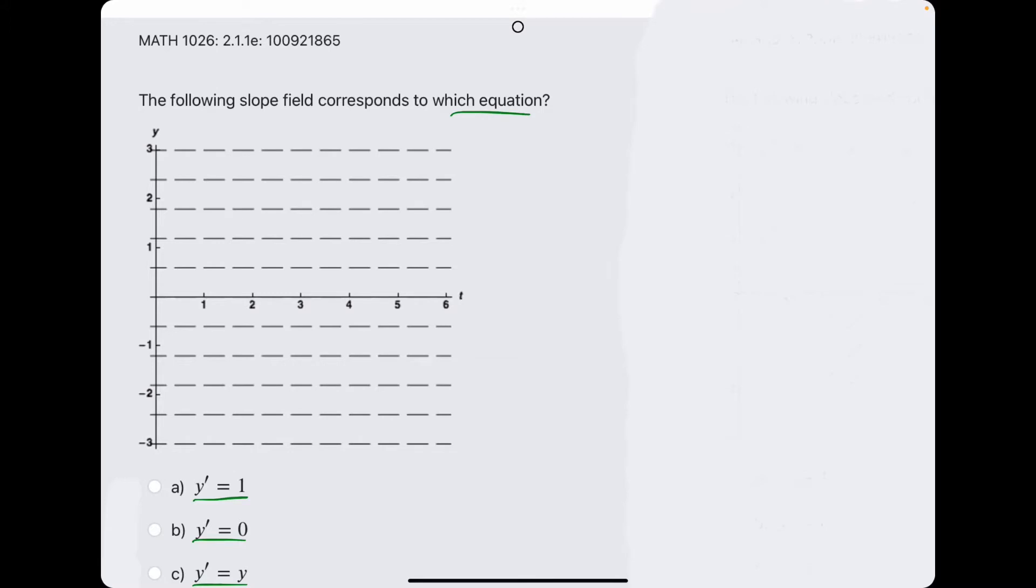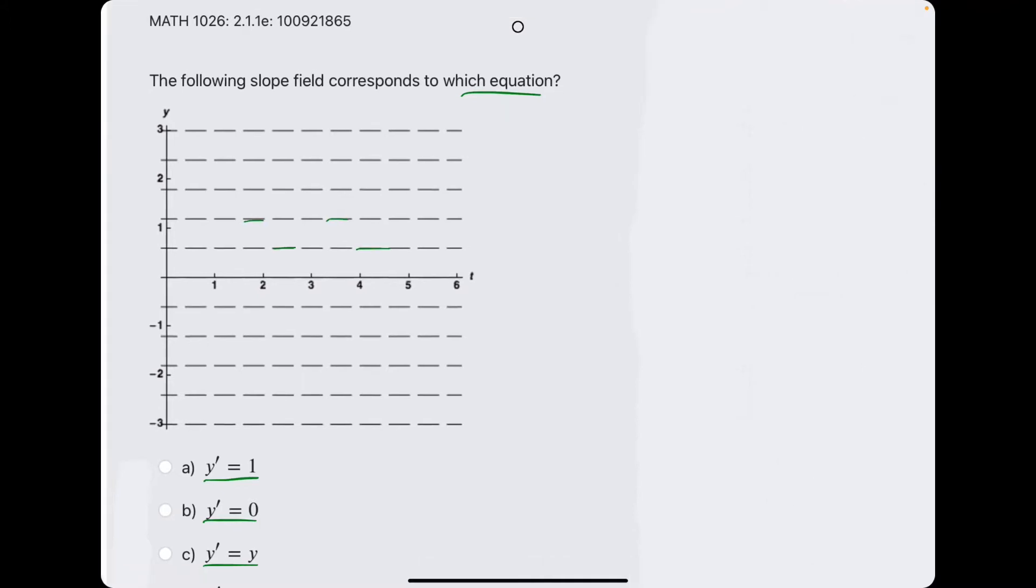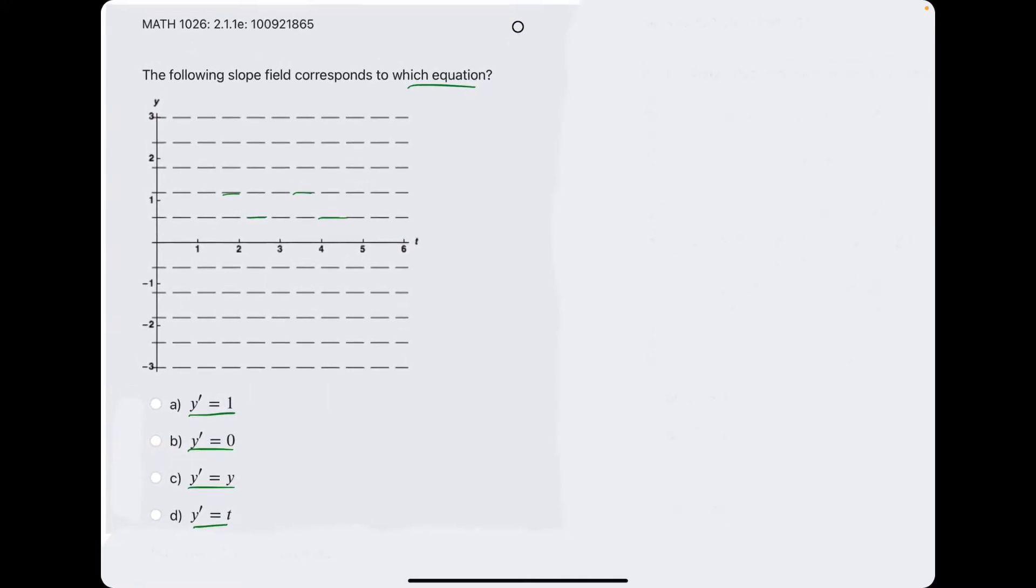So basically, all these lines have the same slope, and that slope in this case is 0 because all these lines are flat. And so really, we're just looking for the one that tells us that y prime or the slope at any point is equal to 0. So that would be option B. Let's break out the eraser to see that B is our answer.